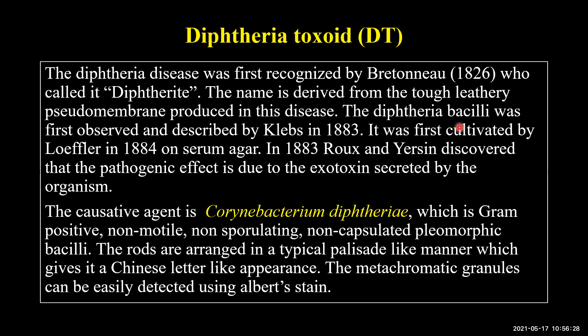The diphtheria bacillus was first observed and described by Klebs in the year 1883. The organism was first cultivated by Löffler in 1884 on serum agar. In 1883, Roux and Yersin discovered that the pathogenic effect of diphtheria bacilli, that is Corynebacterium diphtheriae, is due to the exotoxin produced by the organism.